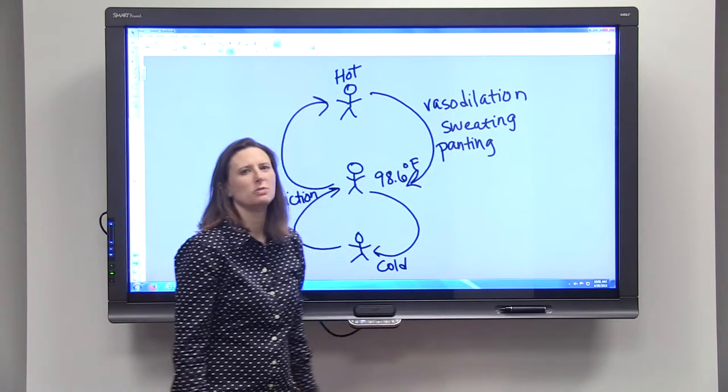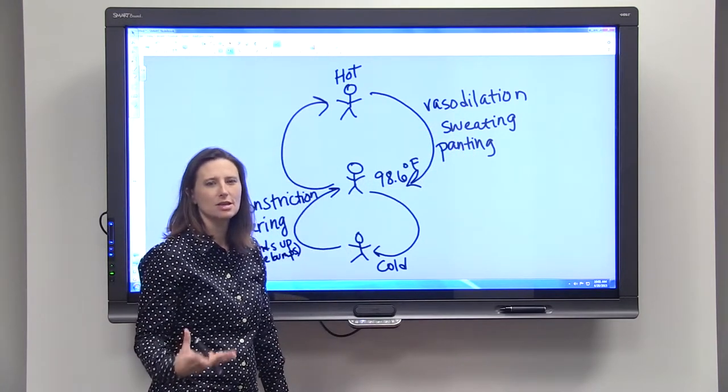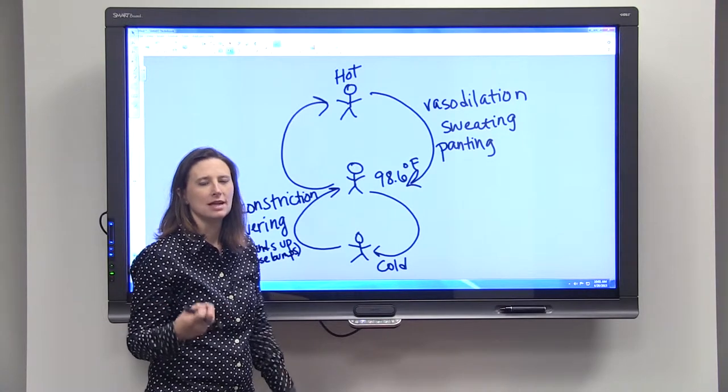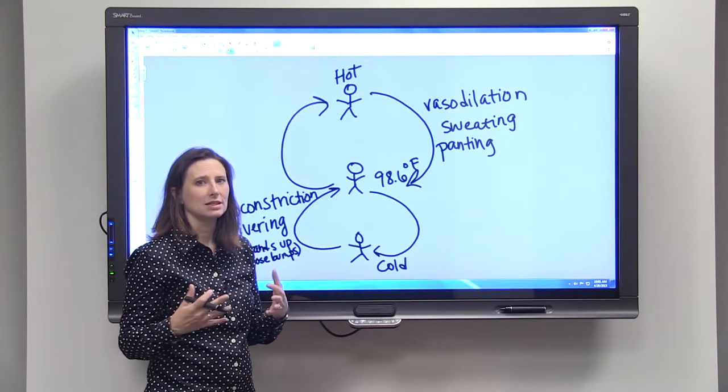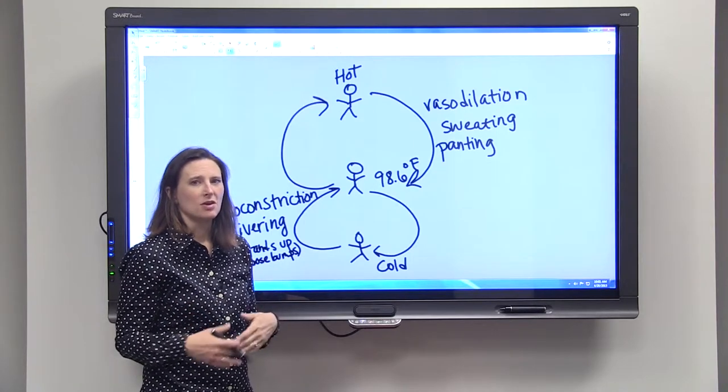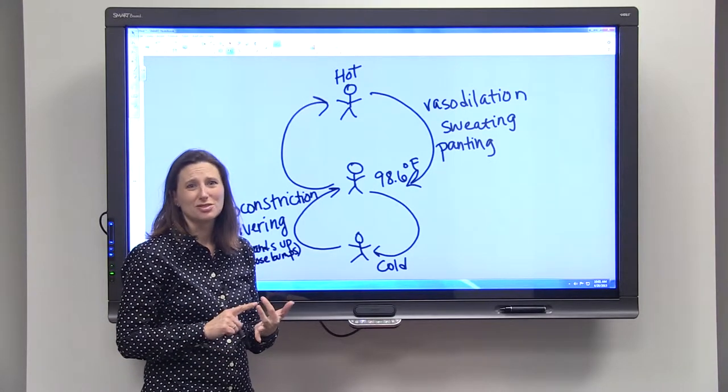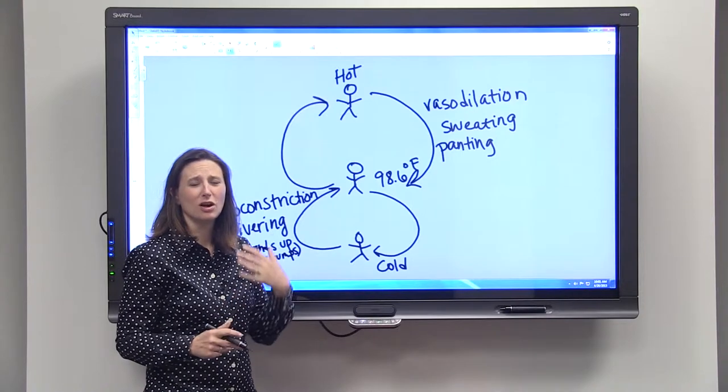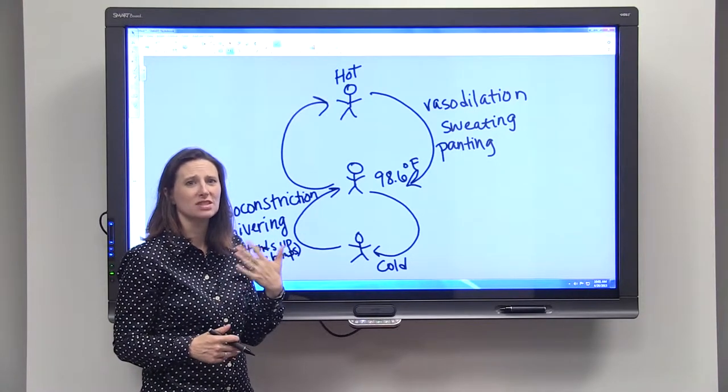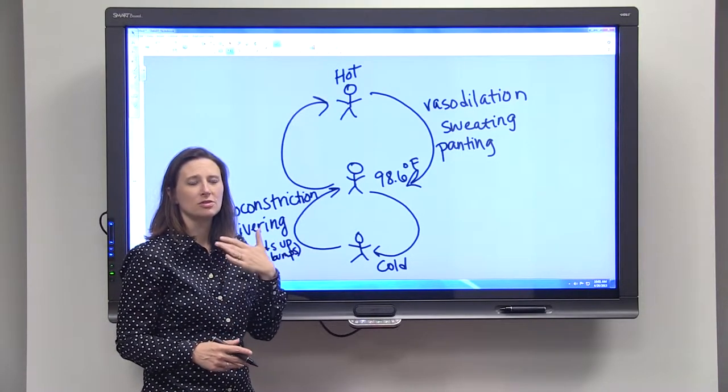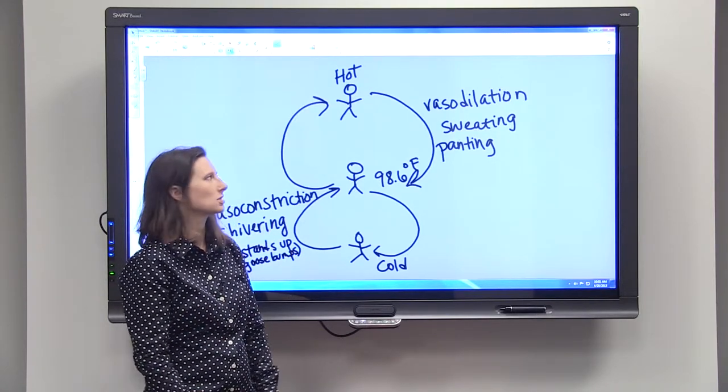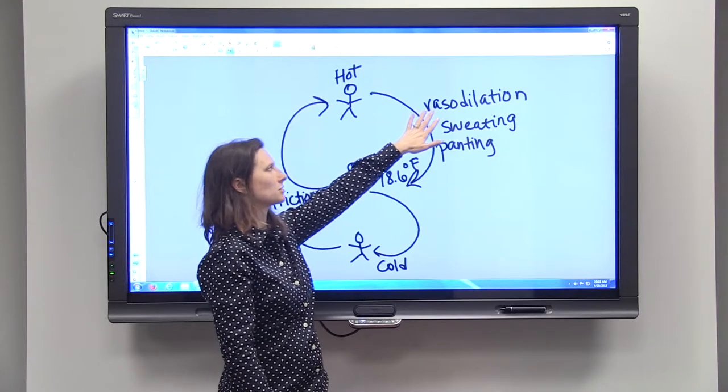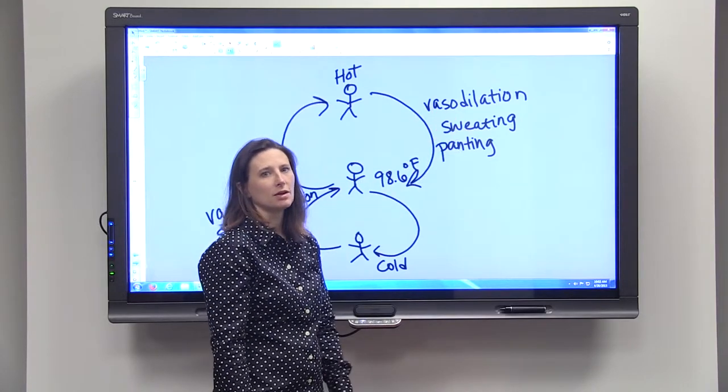Vasodilation, which means that your blood vessels that are really close to the surface of your skin dilate. They get larger. That's a way for more heat to leave your bloodstream. So that's why if you go running or it's just really hot outside, you are going to be flushed. Your skin gets redder because there's more blood going closer to the surface of your skin. That's why a person gets red in the face when they're hot.